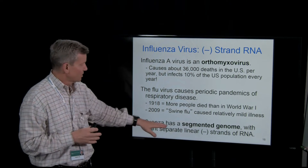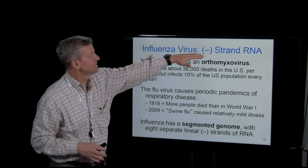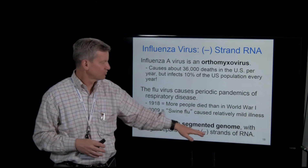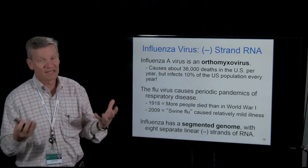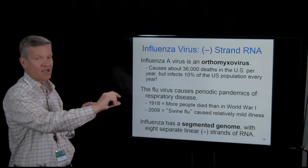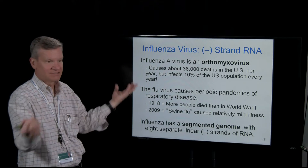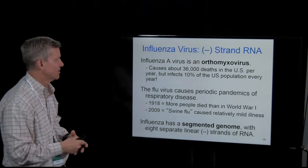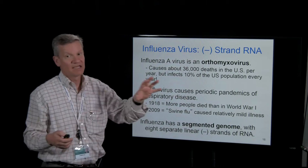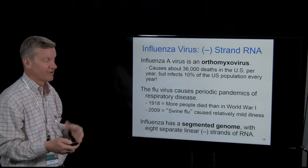Influenza has a segmented genome — it is negative sense RNA, with eight separate linear strands of negative sense or anti-sense RNA. A ribosome can't hook right onto that negative sense because it won't make the right amino acids — it'll just make nonsense protein. So it has to get converted to positive sense, and remember, positive is viral messenger RNA.